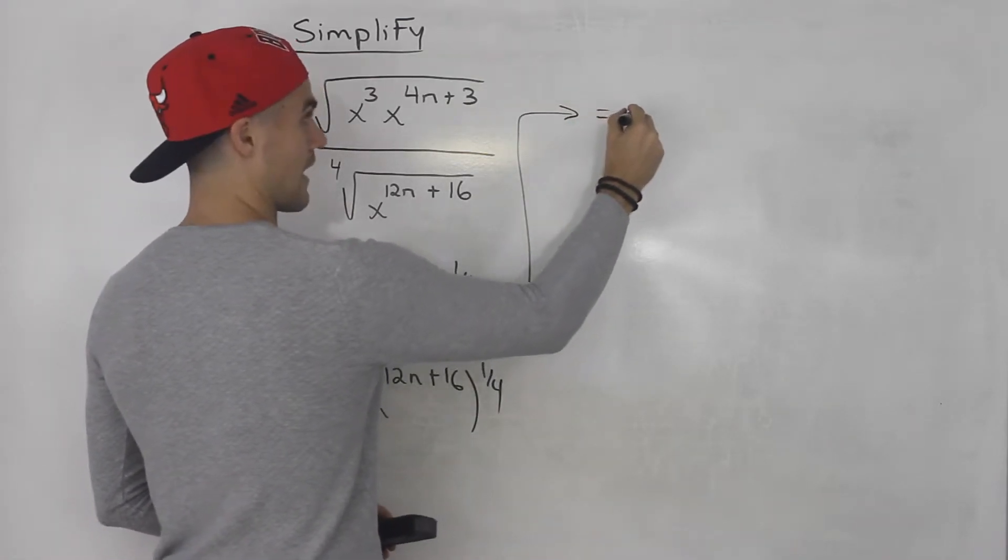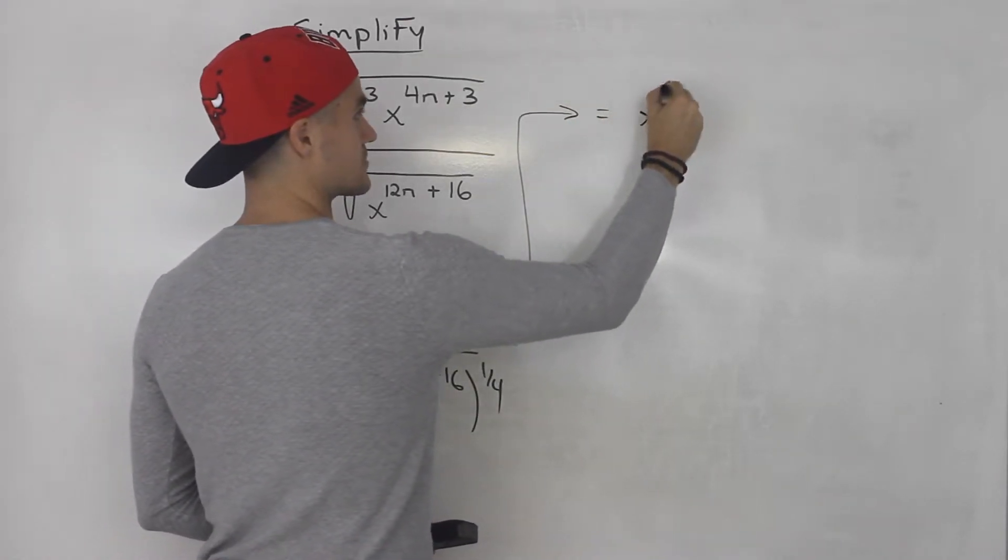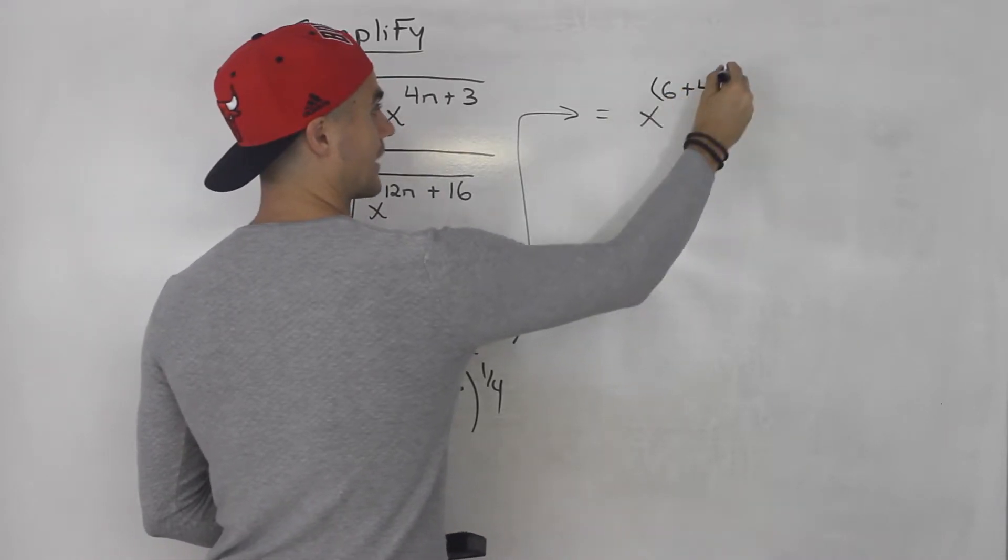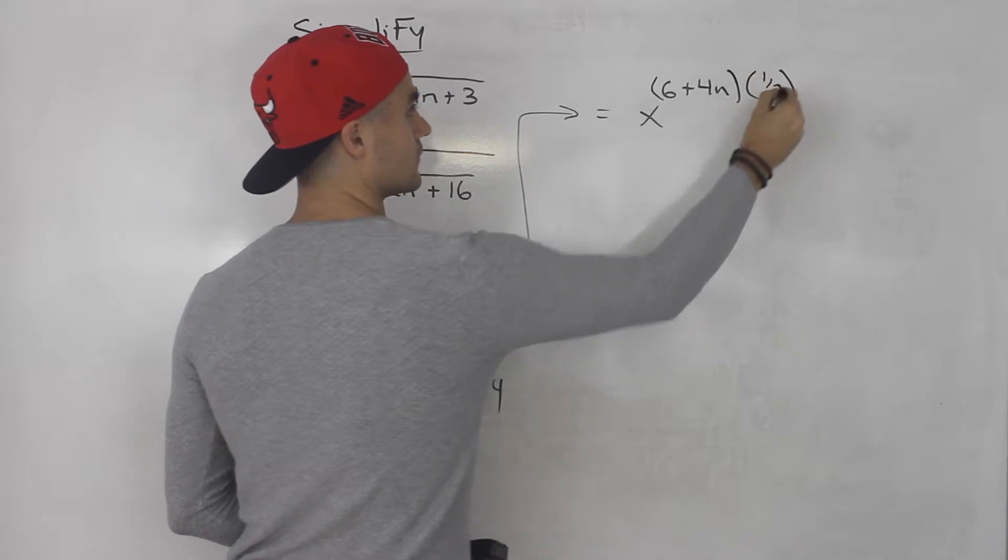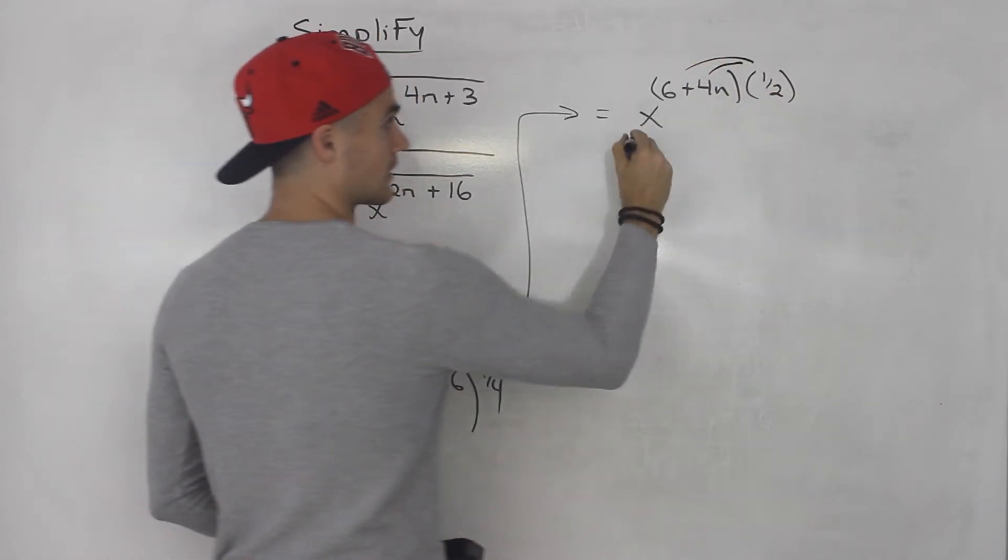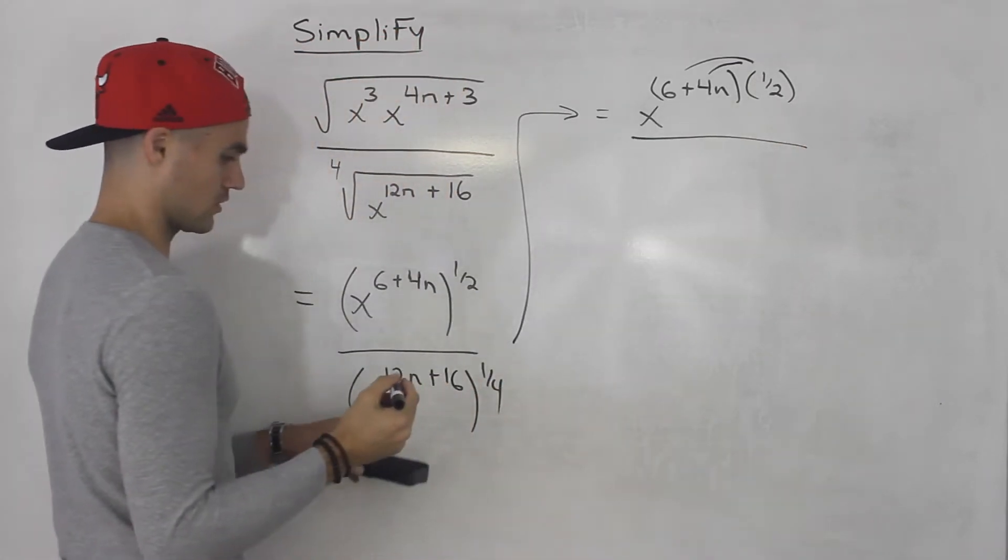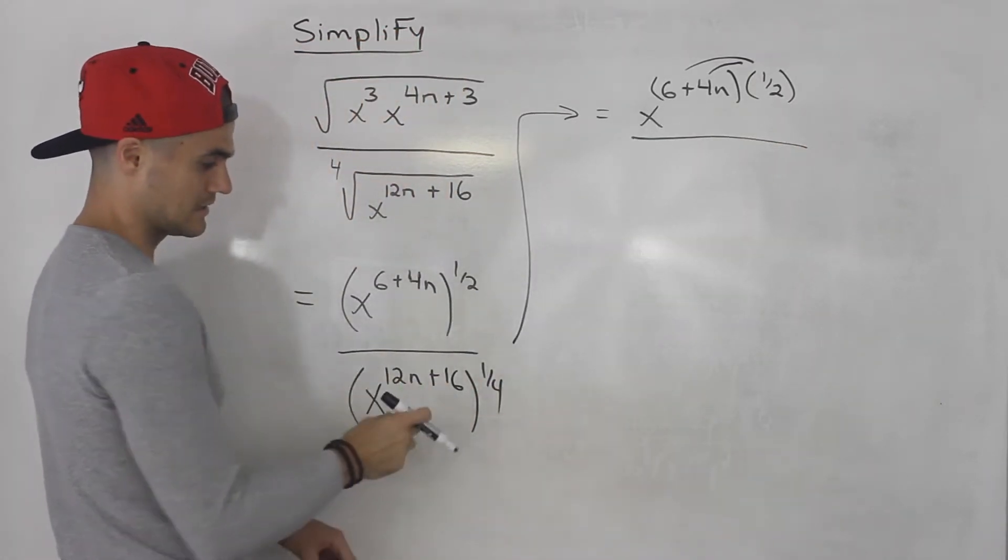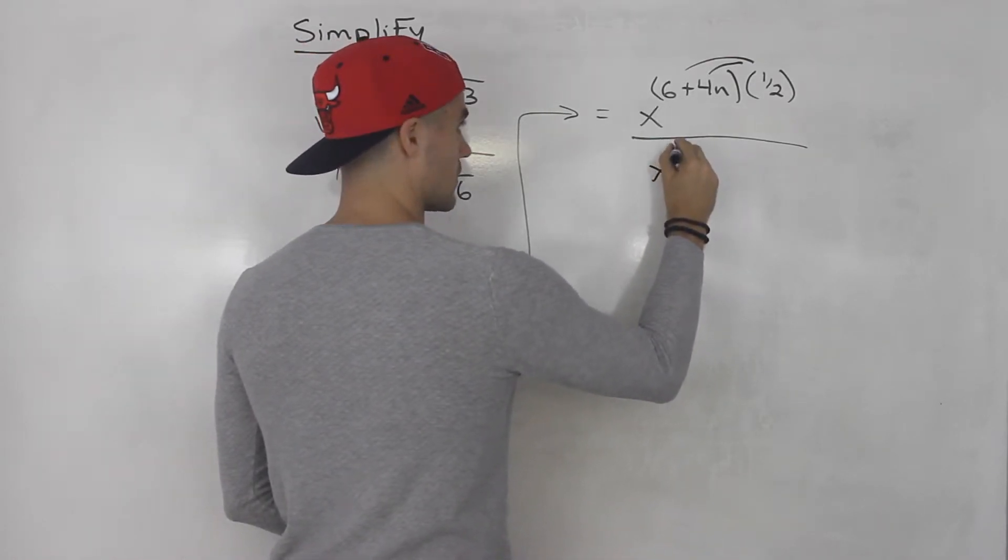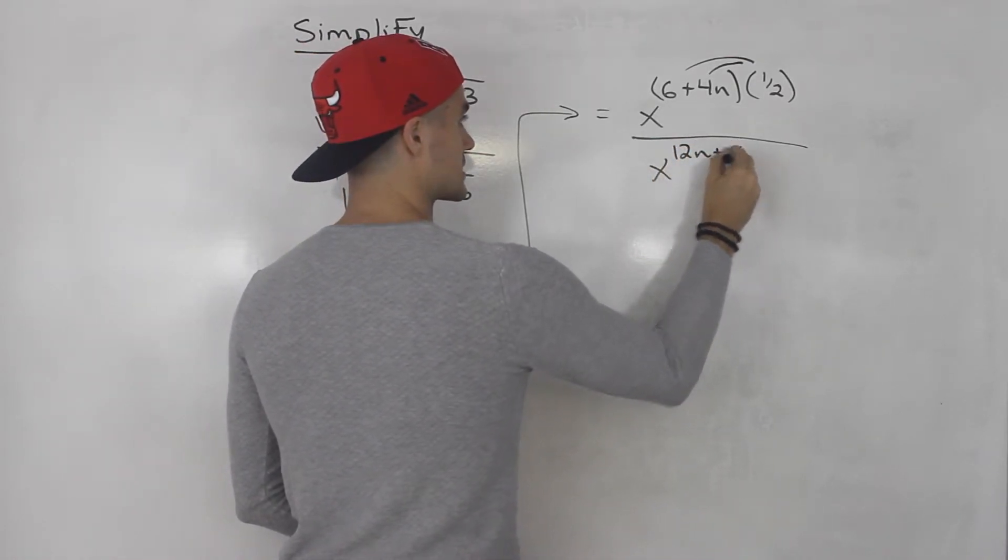So here's what I mean by that. We're gonna have x to the power of 6 plus 4n and that whole thing is going to be multiplied by 1 over 2. So we're gonna have to distribute that 1 over 2 inside the bracket. This is going to be all over this 12n plus 16 that's going to be multiplied by 1 over 4.